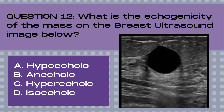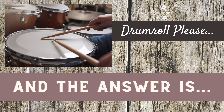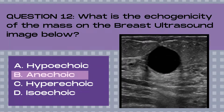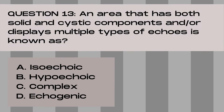Question 12. What is the echogenicity of the mass on the breast ultrasound image below? A. Hypoechoic, B. Anechoic, C. Hyperechoic, or D. Isoechoic. And the answer is B. Anechoic. Anechoic structures on ultrasound are black inside. In this particular image, we're looking at a cyst — it's nice and black inside, indicating a simple cyst.